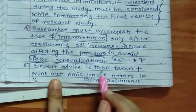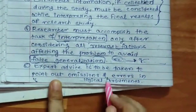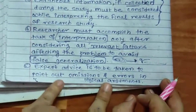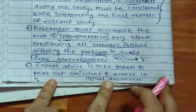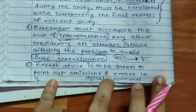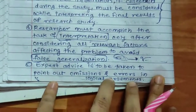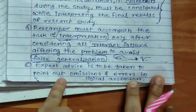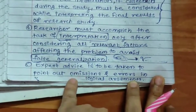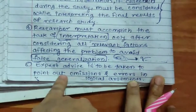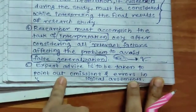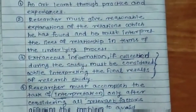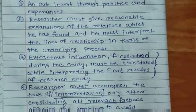Expert advice is to be taken to point out omissions and errors in logical argument. अगर कहीं पर भी difficulty आ रही है, तो उस area में जो subject matter expert होता है, उसका अगर researcher ने suggestions लिये, in that case it will be helpful to derive proper conclusion and to interpret the findings. This is about techniques of interpretation.